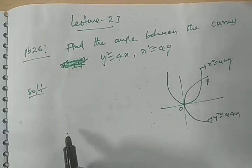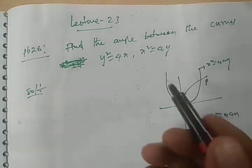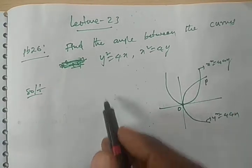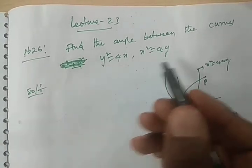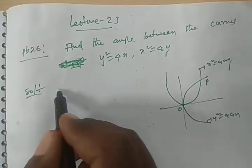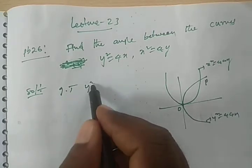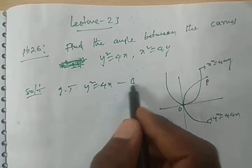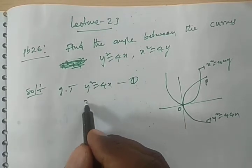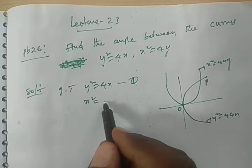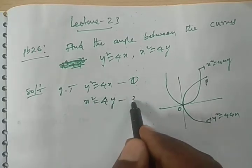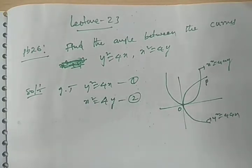To find the intersecting points of the given curves, we have to solve these two equations. Given: y² = 4x — call this equation 1, and x² = 4y — call this equation 2.